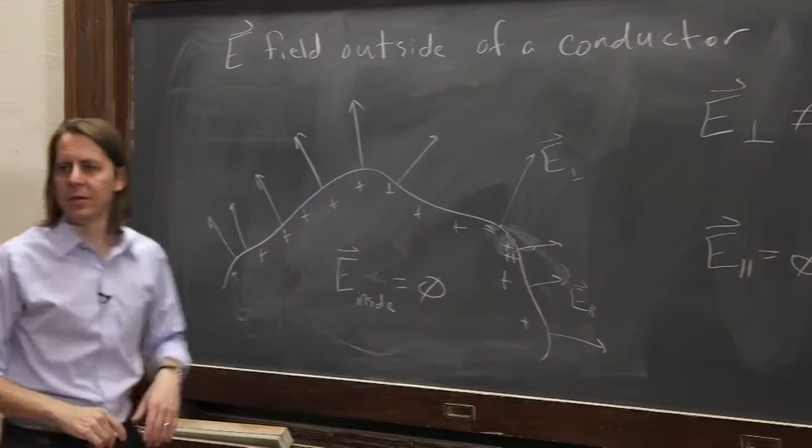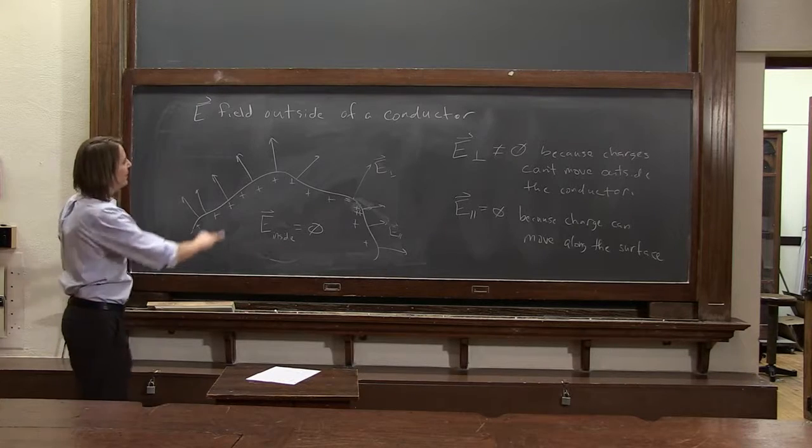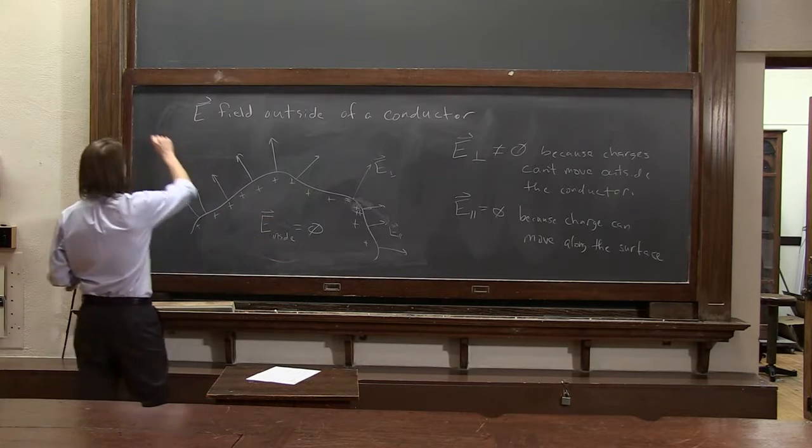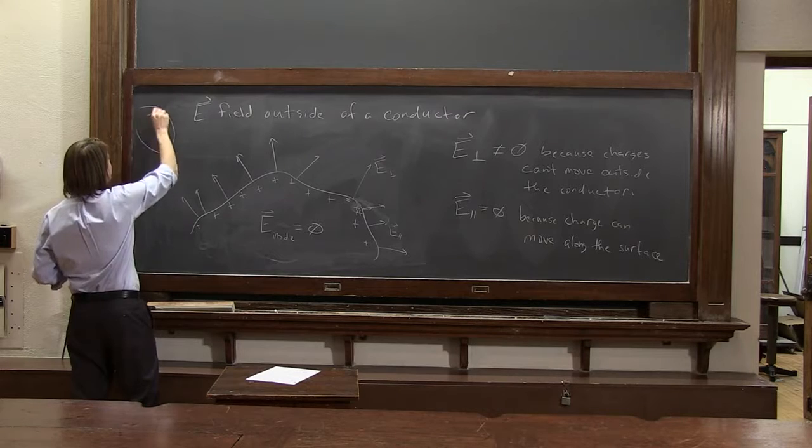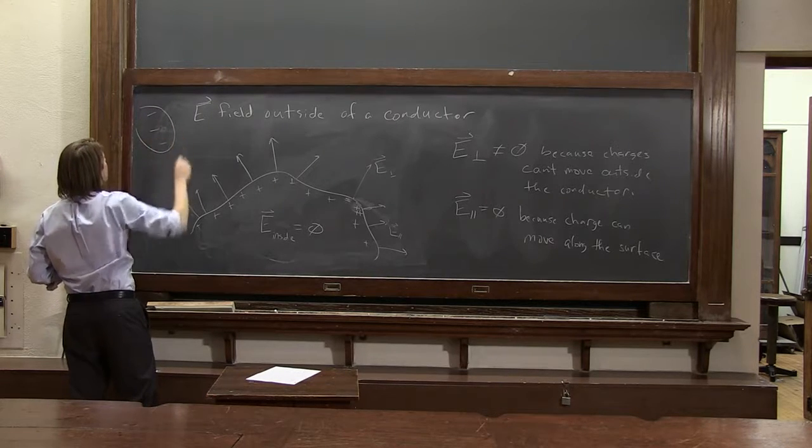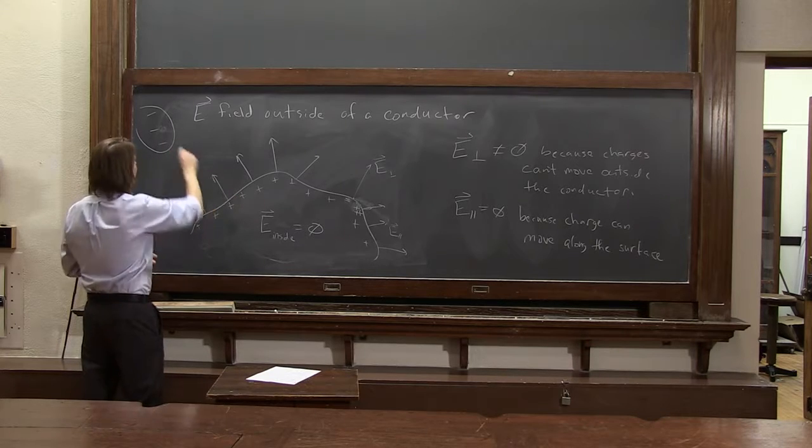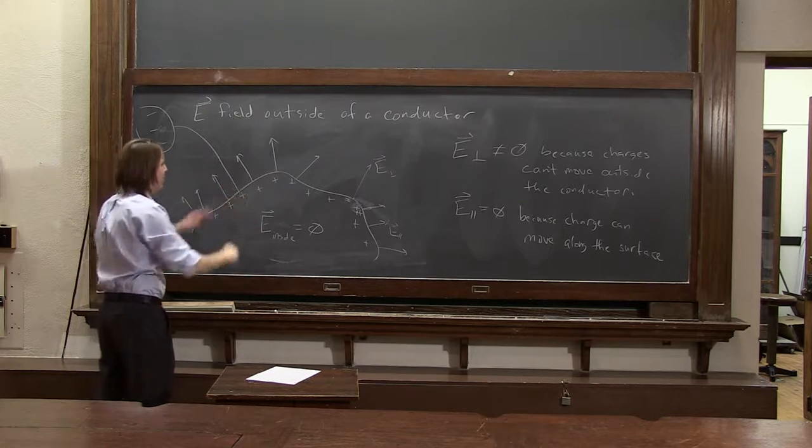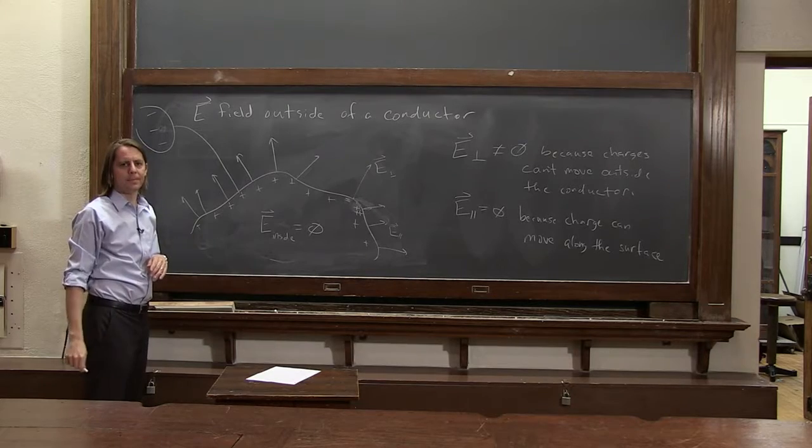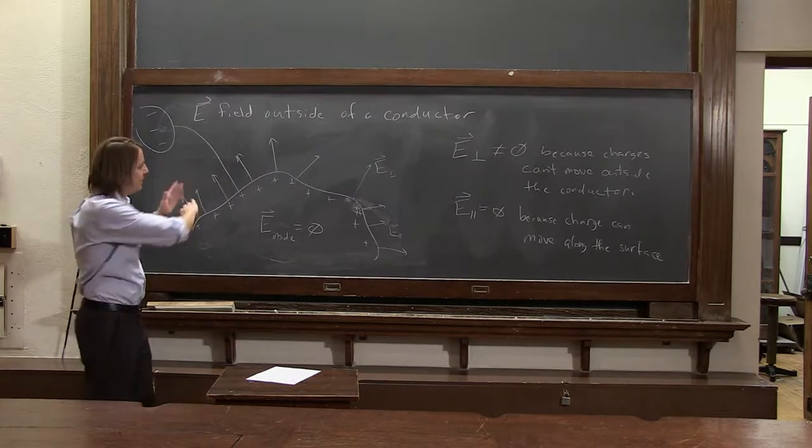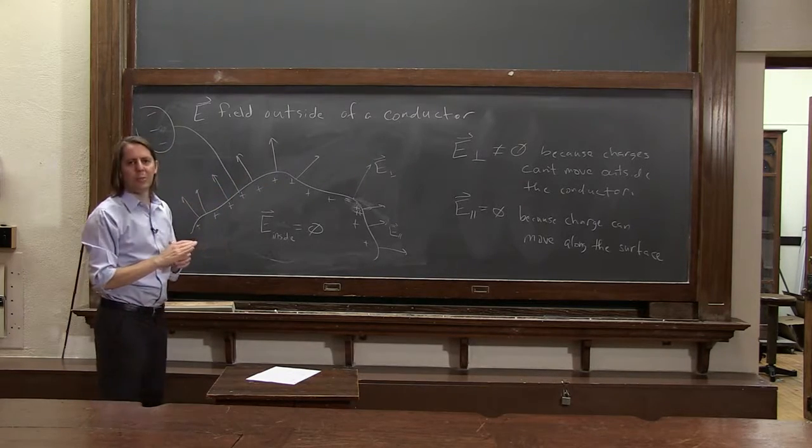You just draw the lines perpendicular to the surface everywhere. Or even if it weren't charged, even if you had some negative charge out here, and these field lines were just between the metal and the negative charge, they would always terminate perpendicular to the surface of the metal. So E field is always perpendicular to a metal surface.